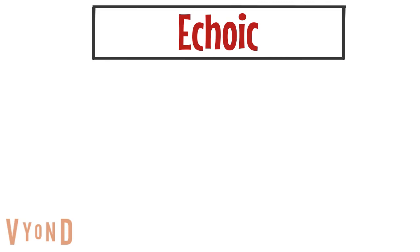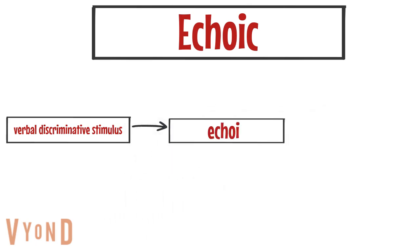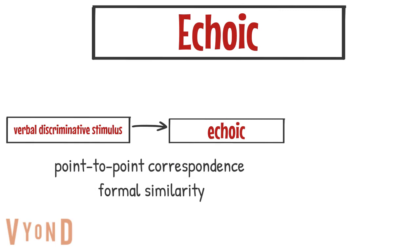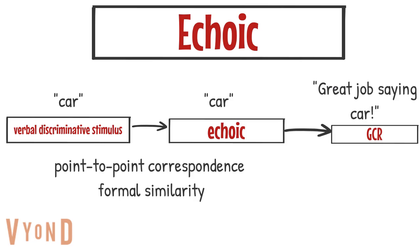The echoic is a verbal operant that occurs when a speaker repeats the verbal behavior of another speaker. The echoic operant is controlled by a verbal discriminative stimulus that has point-to-point correspondence and formal similarity with the response, and it results in a generalized conditioned reinforcer such as praise. For example, a speaker says 'car,' another speaker says 'car,' and then the first speaker says 'great job saying car.' So it's basically imitation.